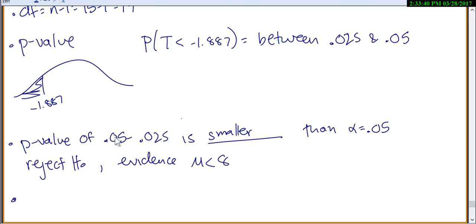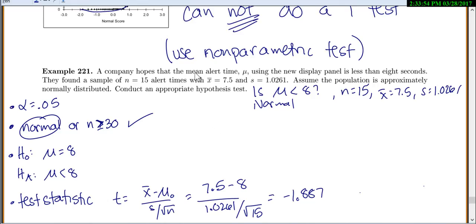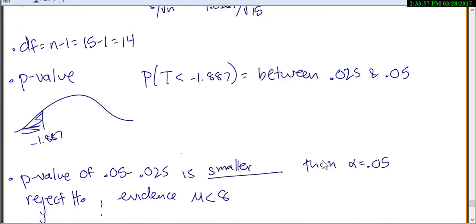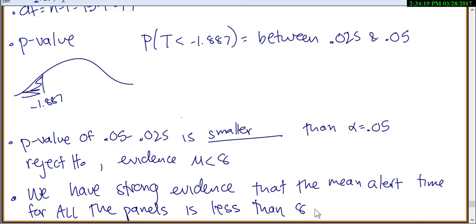Alternative is that our mean is less than 8. And then our p-value is somewhere between 0.025 and 0.05. So we say we have strong evidence that, and let's go back and see what we're looking at, it's the mean alert time using our new display panel. So the mean alert time for all, again emphasize that word, all, this is for all the panels, is less than 8 seconds.